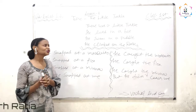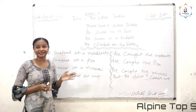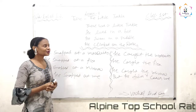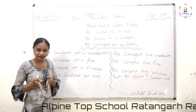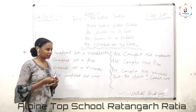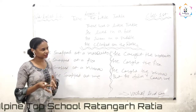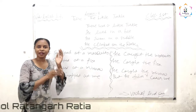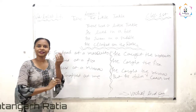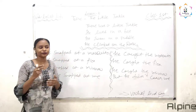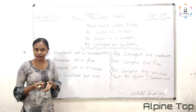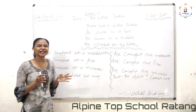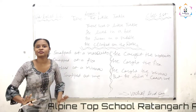Before starting, let's know the summary of this poem. Have you seen mosquitoes? Everybody knows mosquitoes. So what does your mama do? She starts applying Odomos or coils — these are the things we try to get rid of mosquitoes.